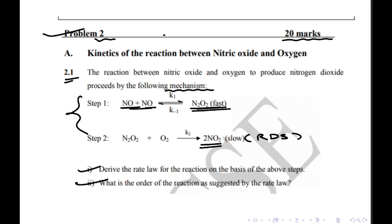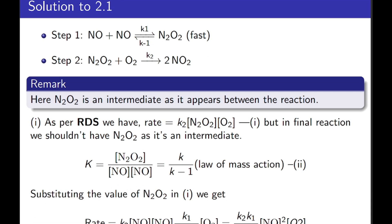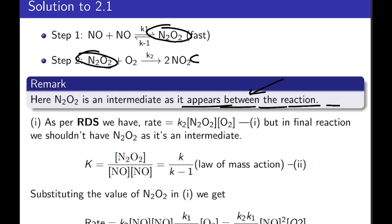The first thing that should strike in our mind is that for finding the rate law or overall rate expression of the reaction, we have to take help of the RDS and then eliminate the intermediate occurring in the reaction. As we know, an intermediate is a species which appears between steps but not in the final rate law. N₂O₂ occurs in the first step and is consumed in the second step, so it gets cancelled out and is not present in our final rate expression. As per the RDS, the rate equals K₂ times [N₂O₂] times [O₂].